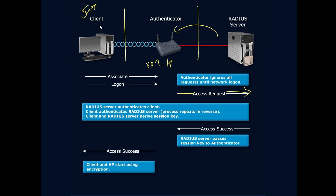Once authentication in both directions has taken place, an access success message is given to the authenticator — everything worked out. The client and access point then start using whatever encryption is in place, and all traffic passing back and forth is now encrypted.